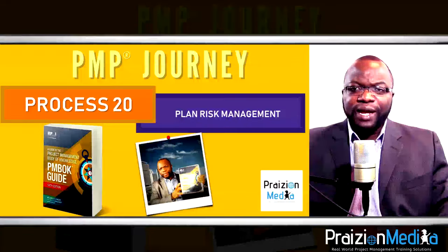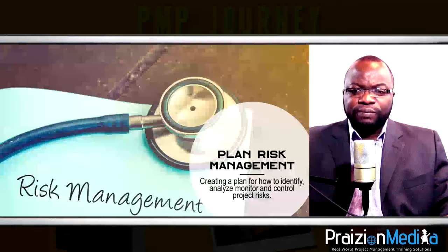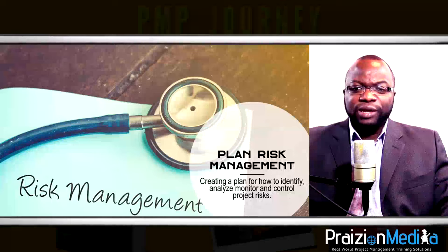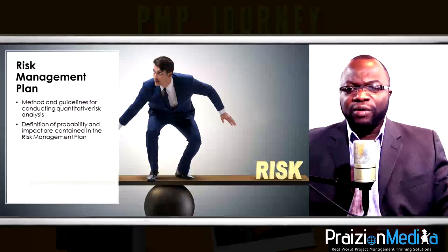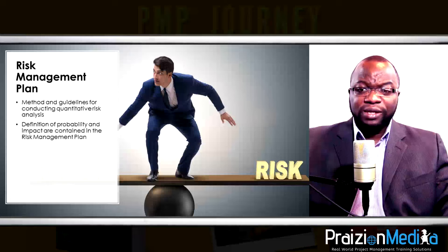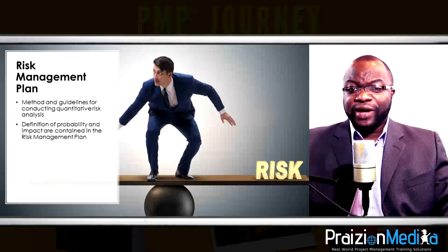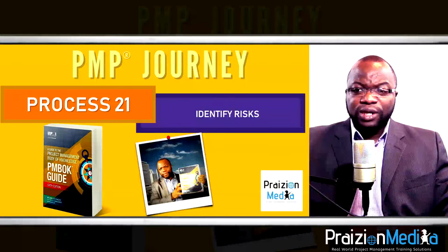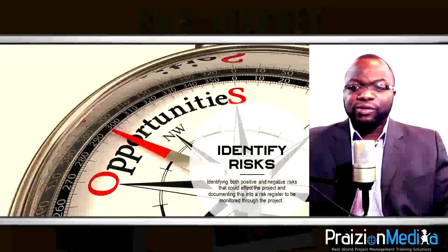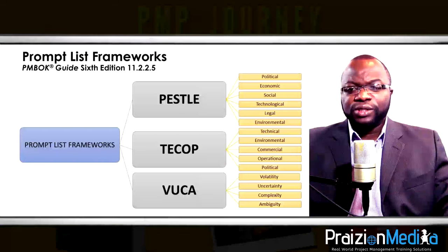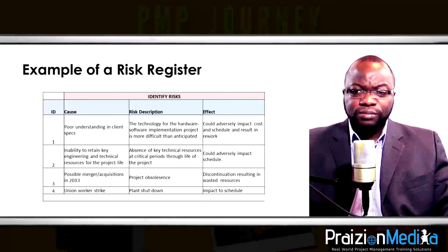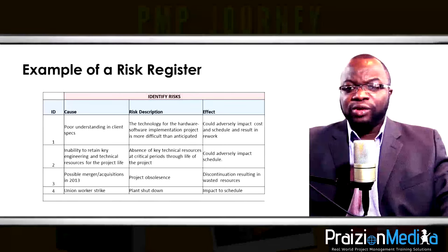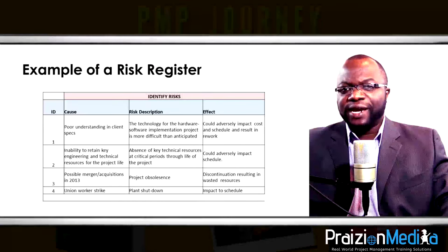Process 20: Plan risk management. The project manager and team need to plan for uncertainty that could impact the project. How are we going to manage that uncertainty? The how is documented in a risk management plan, and then we execute that plan by identifying risks in the next process — Process 21: Identify risks — where you identify both negative risks or threats and positive risks or opportunities.